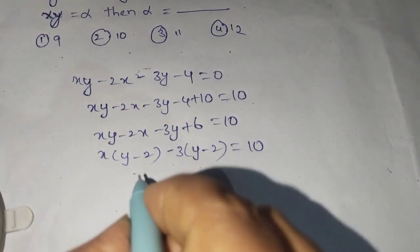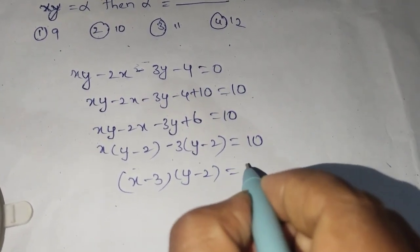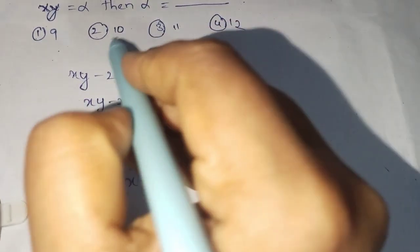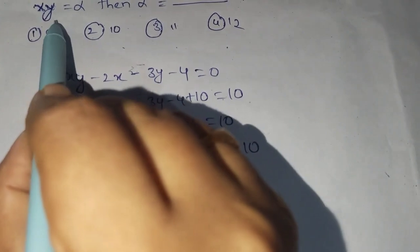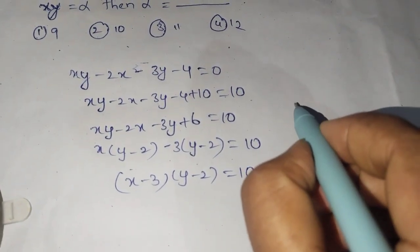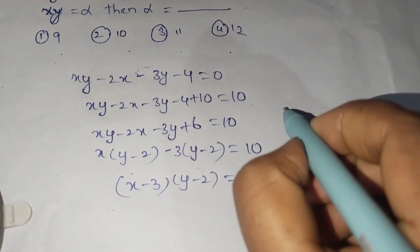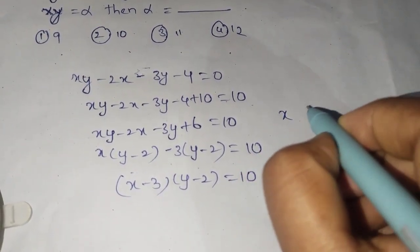Then we get x minus 3 into y minus 2 that equals to 10. In the question they told it is changed to xy equals alpha, means we know that after changing we get equations like...